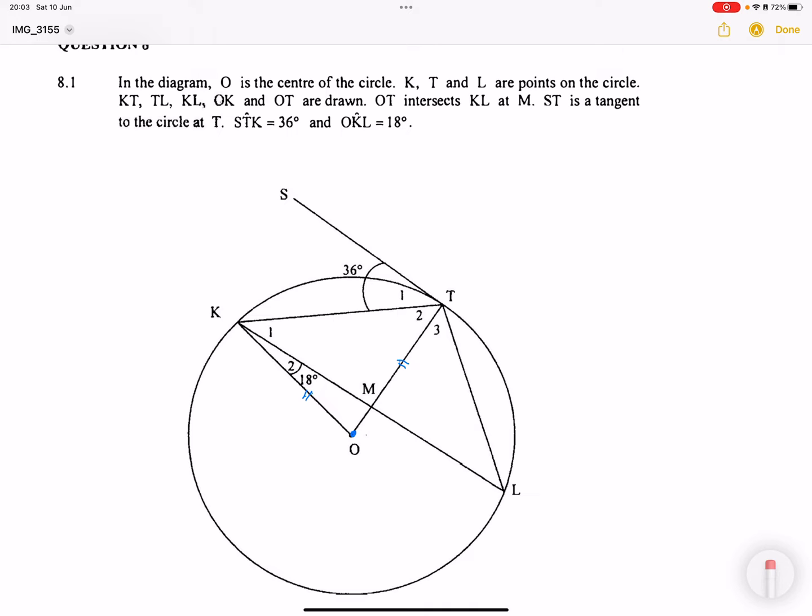They say we've got K, T, and L which are points on the circle. Then they say that KT, TL, KL, OK, and OT are drawn, and OT intersects KL. When they tell us about an intersection, we might have to use angles on a triangle or vertically opposite angles. We'll see as time goes.